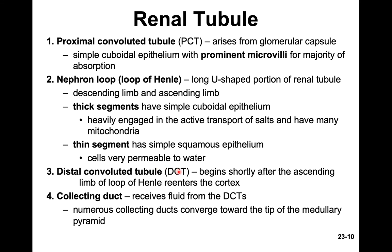The DCT — distal convoluted tubule — is the final region of the tubule where further balancing occurs: calcium, magnesium, protons, and bicarbonates — not the main salts, but other solutes that need to be balanced in your blood and urine. The last part is the collecting duct, which reabsorbs water. It is the last region of the tubule before urine moves into the core of the kidney and eventually into the ureter.